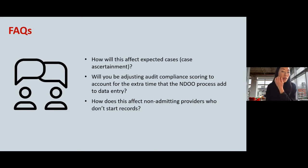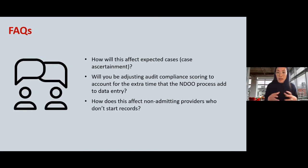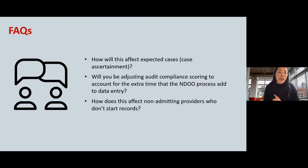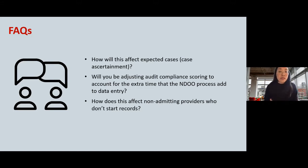Will audit compliance scoring be adjusted to account for the extra time this process adds? Not at the moment — you still need to lock a record within seven days for 100% audit compliance, though this will be kept under review, as it could affect certain teams more than others, especially paper-based teams. Regarding non-admitting providers: yes, they still need to check against the opt-out list, but only for patients who haven't consented earlier in the pathway.